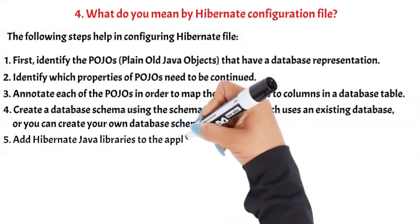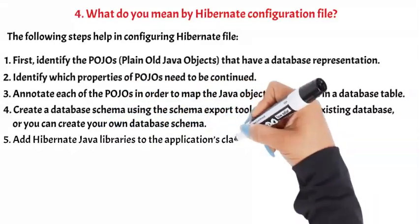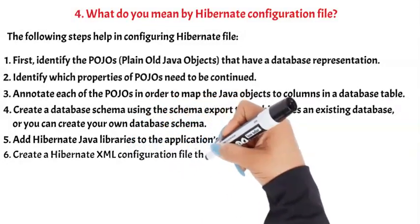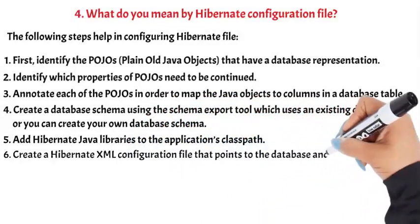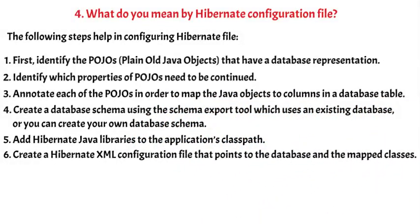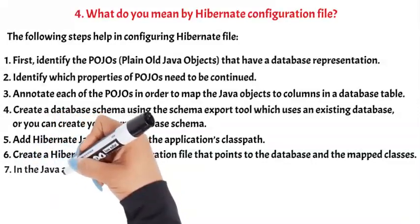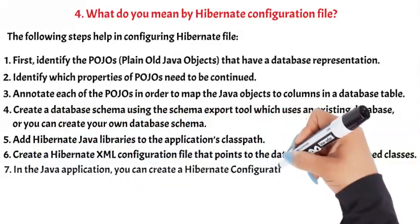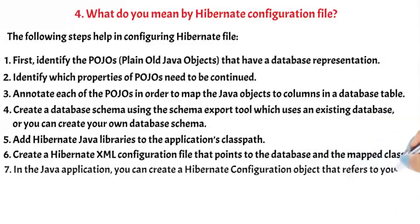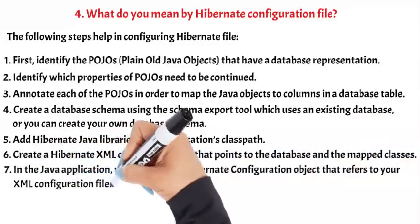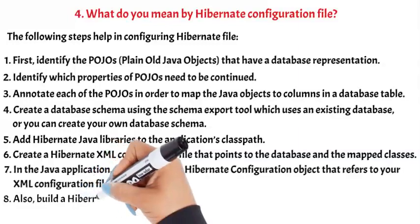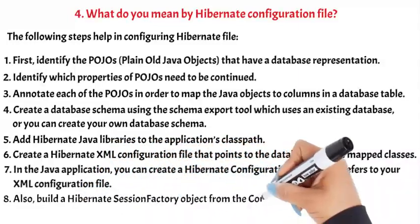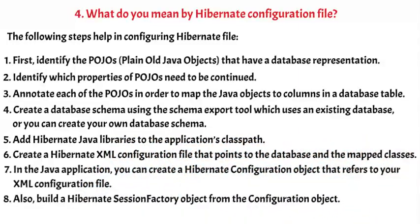Fifth, add Hibernate Java libraries to the application's class path. Sixth, create a Hibernate XML configuration file that points to the database and the mapped classes. Seventh, in the Java application, you can create a Hibernate configuration object that refers to your XML configuration file. Eighth, build a Hibernate Session Factory object from the configuration object.